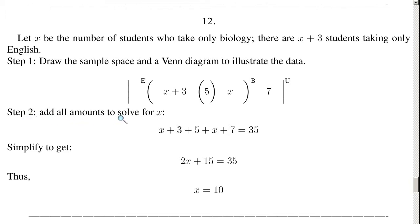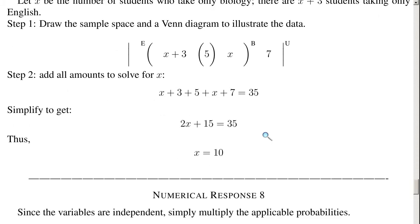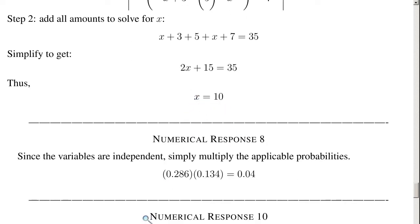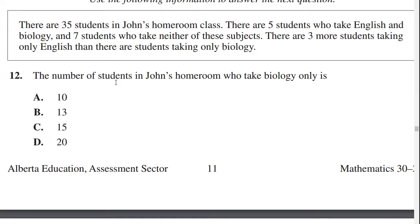Step 2: Add all amounts to solve for X. X plus 3 plus 5 plus X plus 7 equals our total of 35 students. Simplified to get, X plus X is 2X, 3 plus 5 plus 7 is 15, so 2X plus 15 equals 35. Thus, you subtract 15, you get 2X equals 20, and then X equals 10. So X equals 10 is our final answer, A, 10.